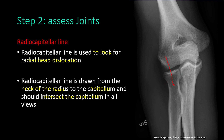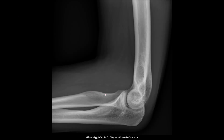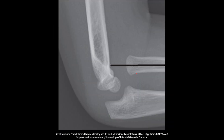An important note is that the radio-capitellar line is drawn from the radial neck and not from the radial shaft, because the radial neck is angulated relative to the radial shaft. On the lateral x-ray, we draw from the radial neck toward the capitellum, and the line intersects the capitellum normally.